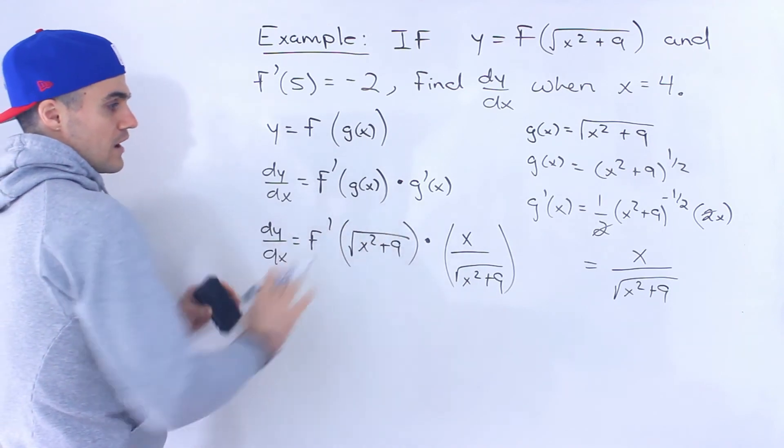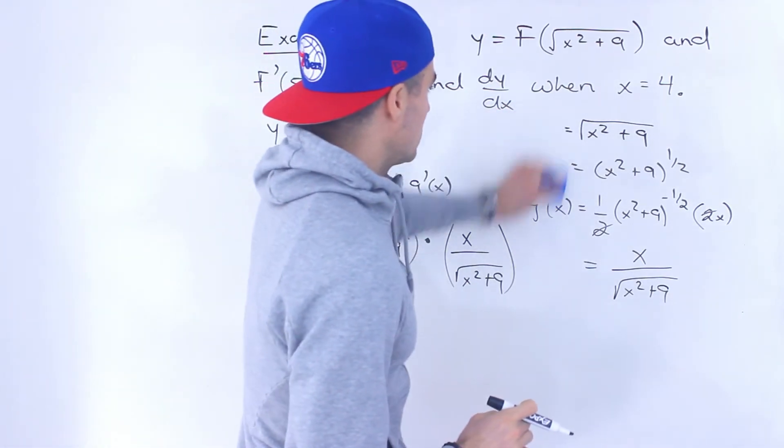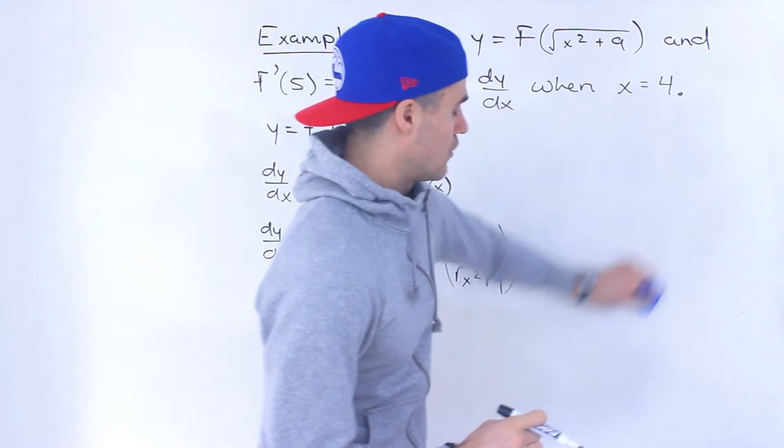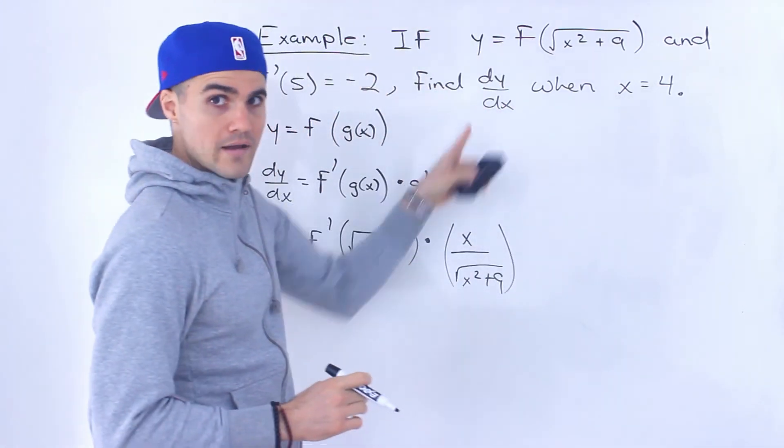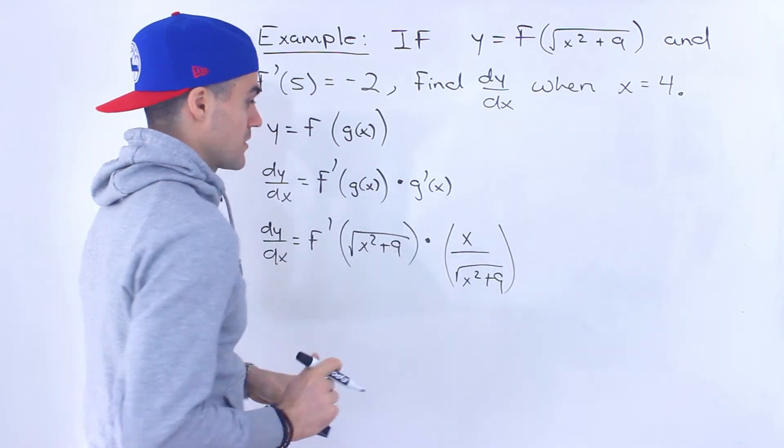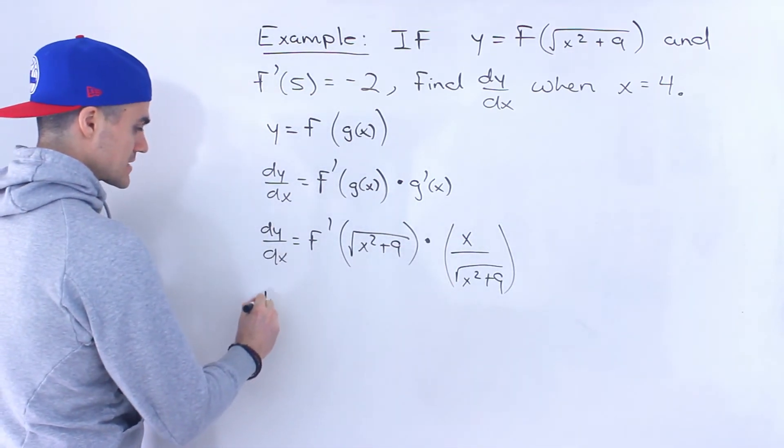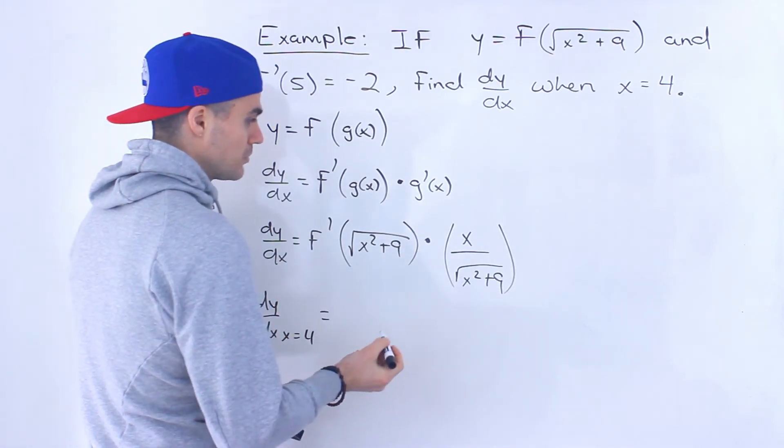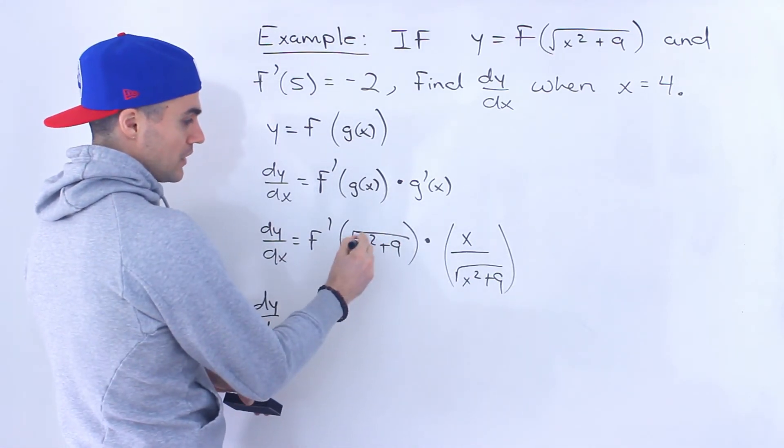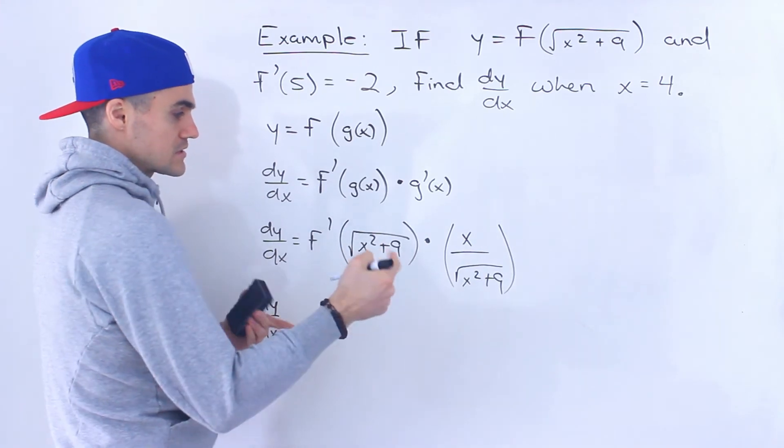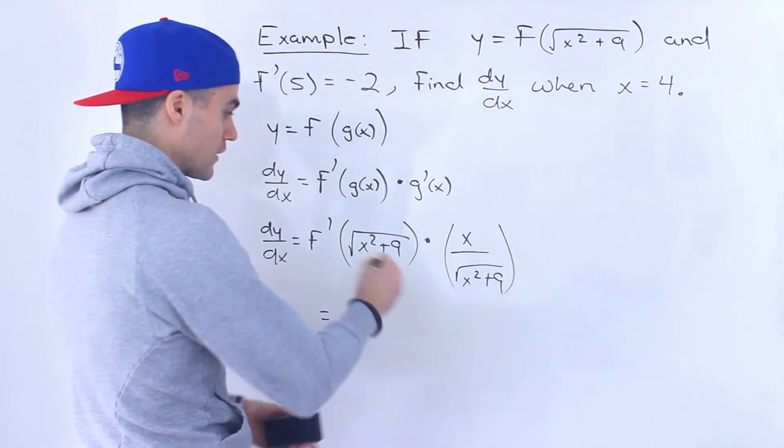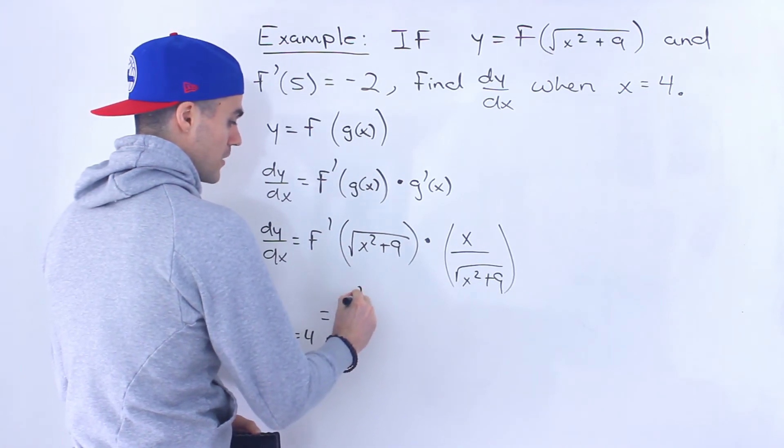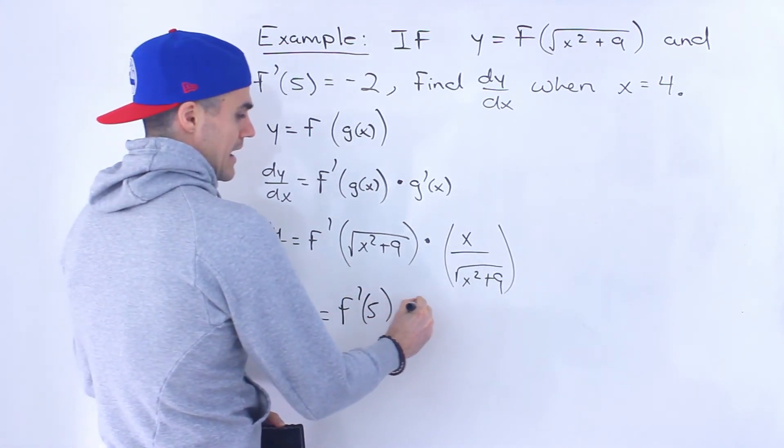Right, so now we have a fairly specific expression for dy by dx, a general expression. But we have to find what dy by dx is when x is equal to 4. So what we're gonna do now is we're gonna plug in 4 for all the x values. So if we plug in 4 here, 4 to the power of 2 is 16 plus 9 is 25. Square root of 25 is 5.